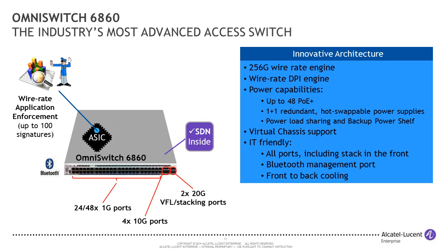The 6860 has an on-board ASIC designed to do wire-rate application enforcement. The ASIC uses signatures and heuristics to identify applications and provide policy enforcement. If you want to treat YouTube differently from Facebook, or dial down the bandwidth allocated to BitTorrent or completely block it, that's all possible at wire rate — for up to 100 different applications per switch.